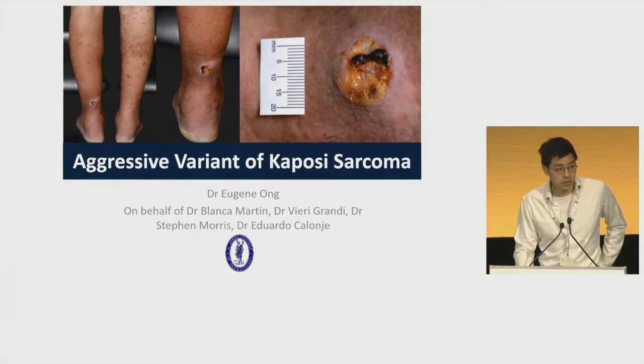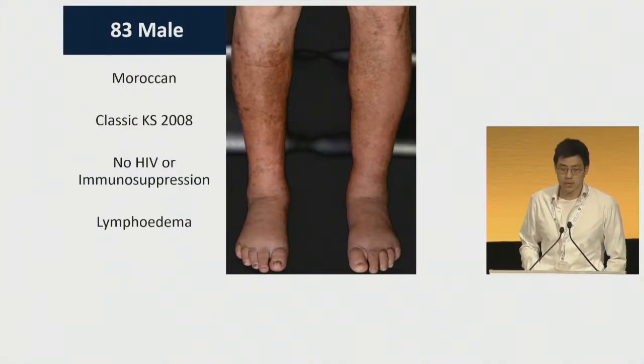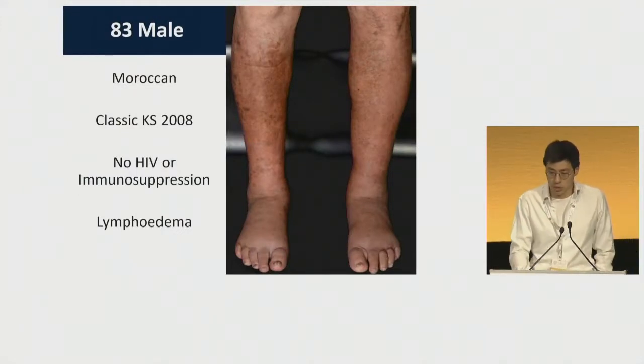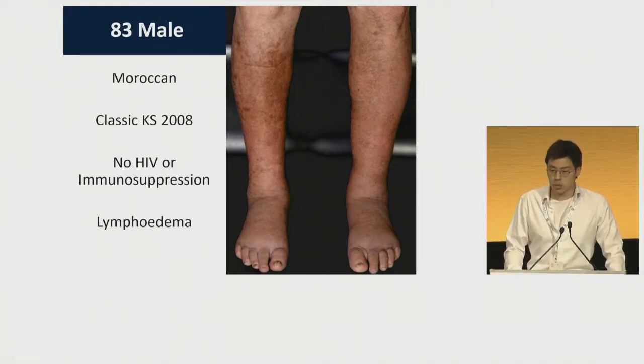The next speaker is Eugene Wong, who will be presenting a case of anaplastic Kaposi sarcoma. Good afternoon. My name is Dr. Wong, and I'm presenting a case of an aggressive variant of Kaposi sarcoma. This was an 83-year-old gentleman from Morocco who presented with classic Kaposi sarcoma, non-HIV or immunosuppression-related, back in 2008.